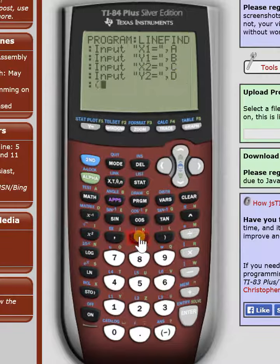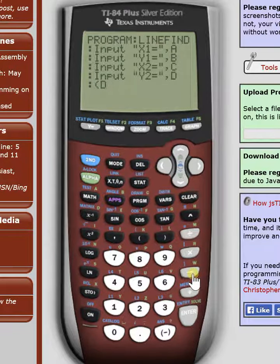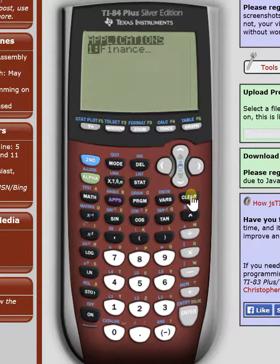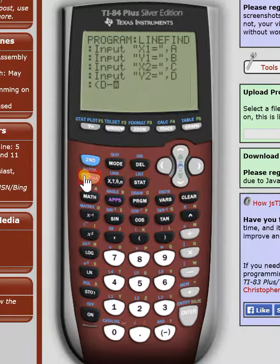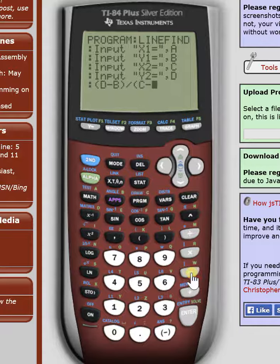So we're going to hit parenthesis, alpha d, minus alpha b. Alpha b, there we go. And that parenthesis is divided by alpha c, minus alpha a. Close off those parenthesis, and that's your slope equation.